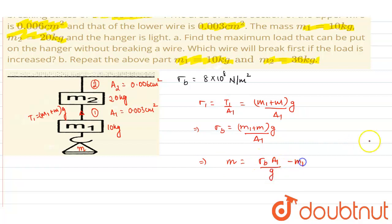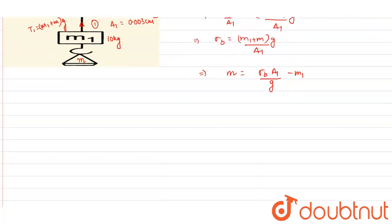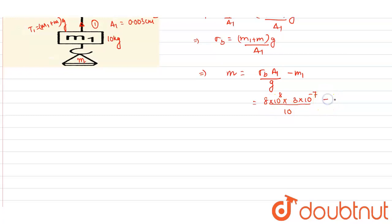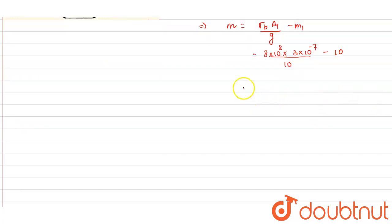Substituting the values: σ_b = 8 × 10⁸, area A1 = 3 × 10⁻⁷ m², g = 10 m/s², and m1 = 10 kg. From here we get the mass m = 14 kg.